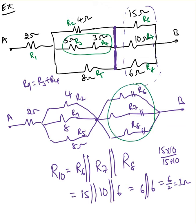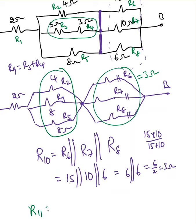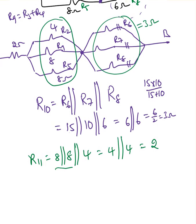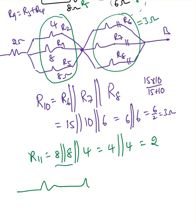All of that combination is equivalent to 3 ohms. Now looking at this part, I'm going to label it R11. R11 equals 8 parallel with 8 parallel with 4. We know that 8 parallel with 8 is 4, because 8 divided by 2 is 4. Then 4 parallel with 4 is 2 ohms. Now I'm going to redraw the circuit again, and I end up with 2 ohms, 2 ohms, and 3 ohms.